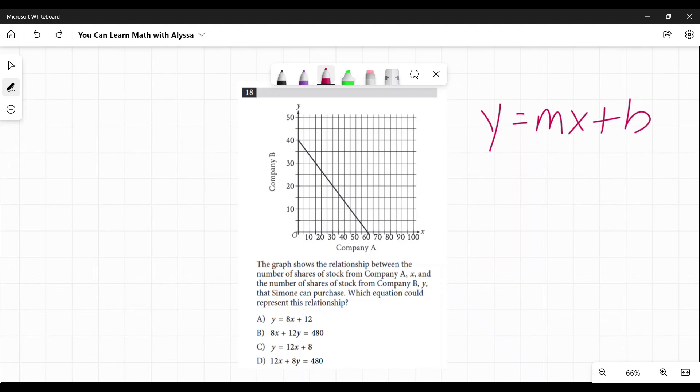The y-intercept is pretty straightforward. I look right here—it's crossing the y-axis at 40. So I know 40 is my y-intercept.